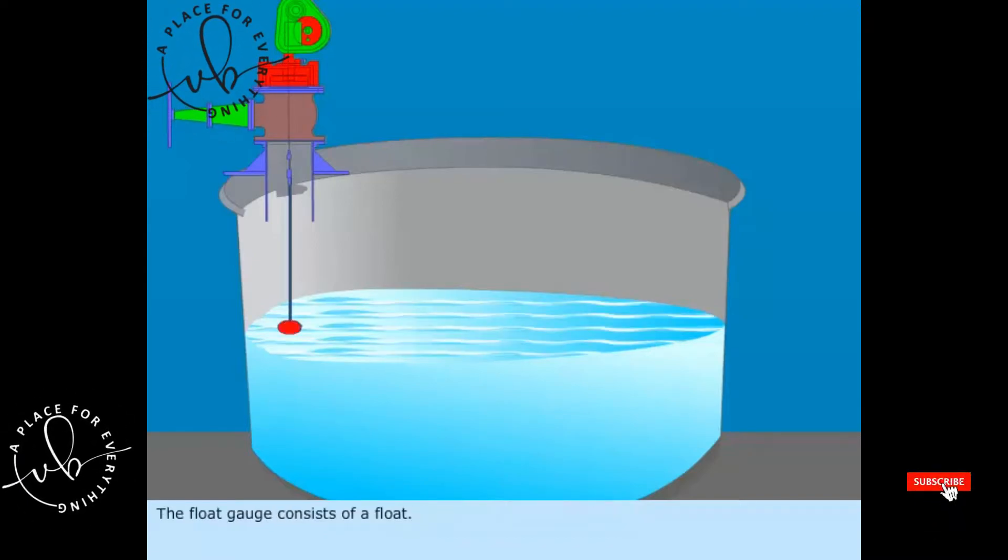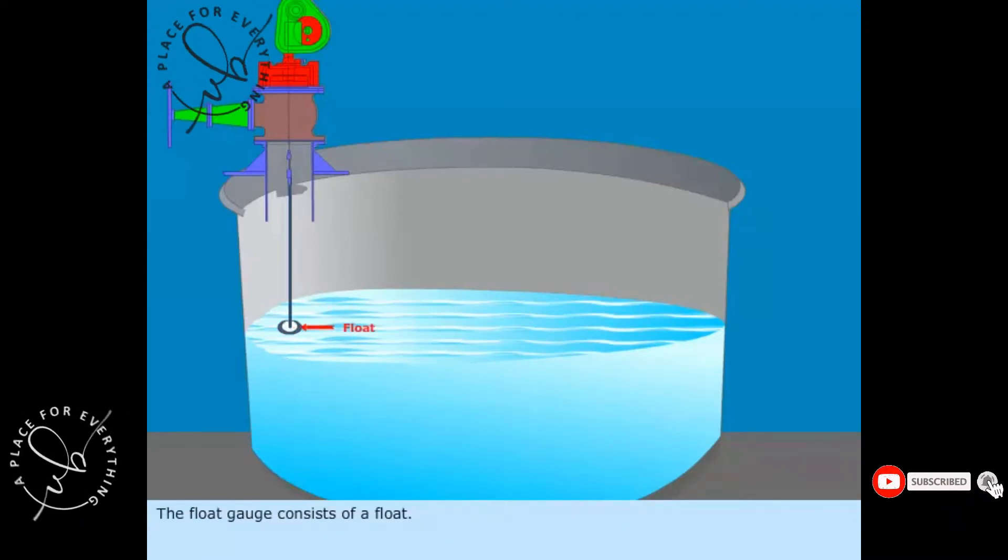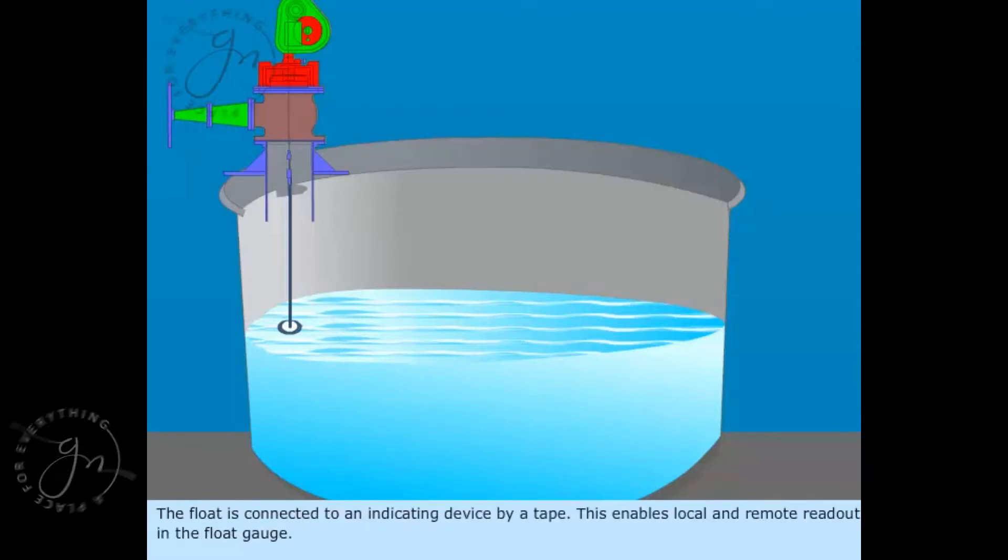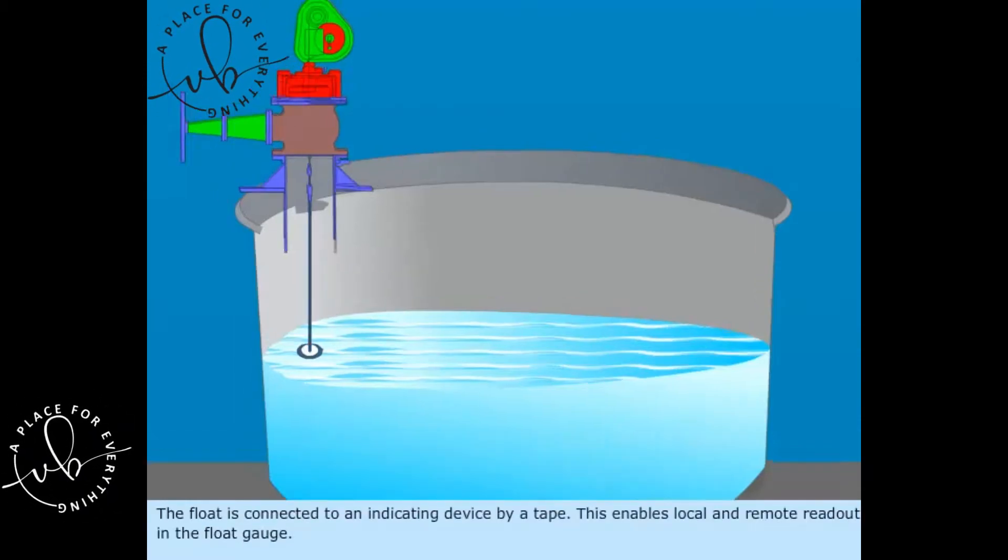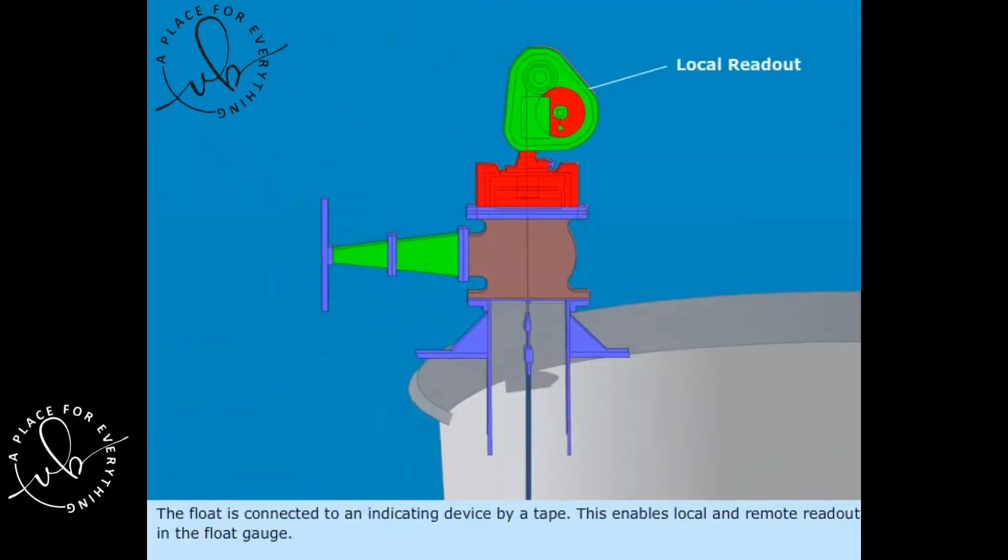The float gauge consists of a float. The float is connected to an indicating device by a tape. This enables local and remote readout in the float gauge.